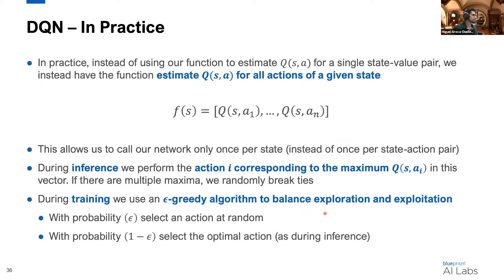One quick twist to what I said previously: in practice, we don't take in the state and action as inputs. Instead, we take in just the state and output a vector of Q values for all actions. This allows us to call our network only once per state instead of once for every state-action pair, taking advantage of potential parallelism. During inference, the agent selects the action with the highest Q value from this vector, and if there are multiple maxima, we simply randomly break ties.